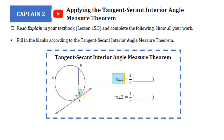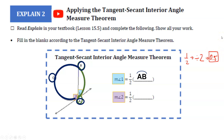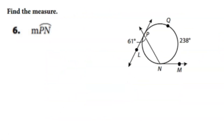Another theorem to go over is the Tangent-Secant Interior Angle Measure Theorem. If I have angle 1, I can figure it out by taking half of its arc. I could also find angle 2 by taking half of the other arc. Again, we could use half, divide by 2, or use 0.5 — all three say the same thing. Decimals were a fan favorite as you saw before.